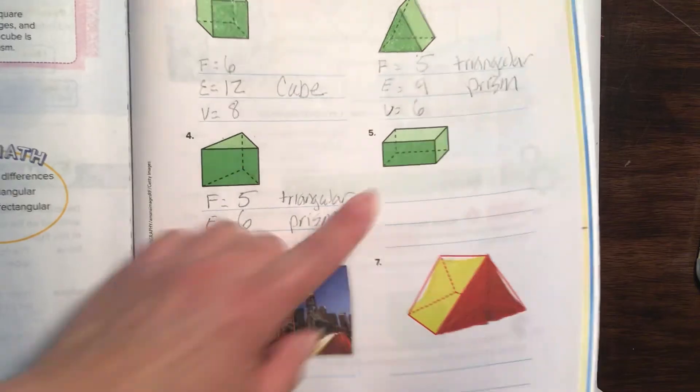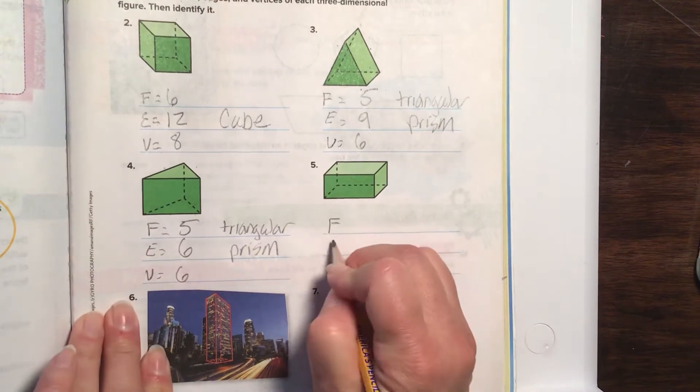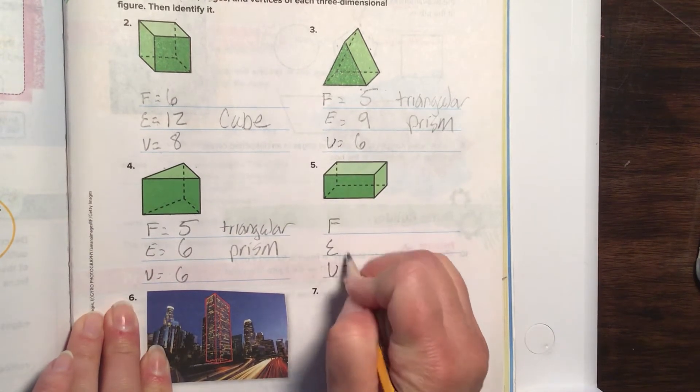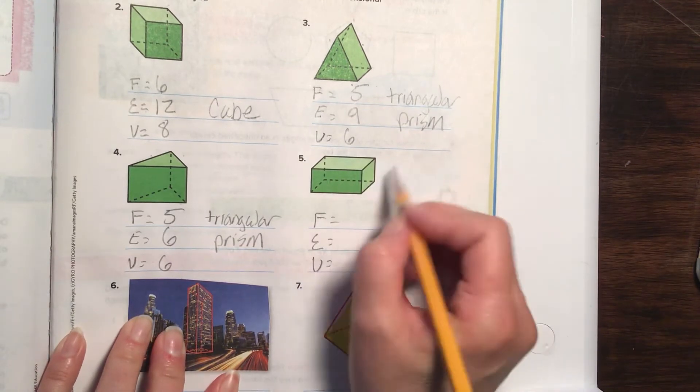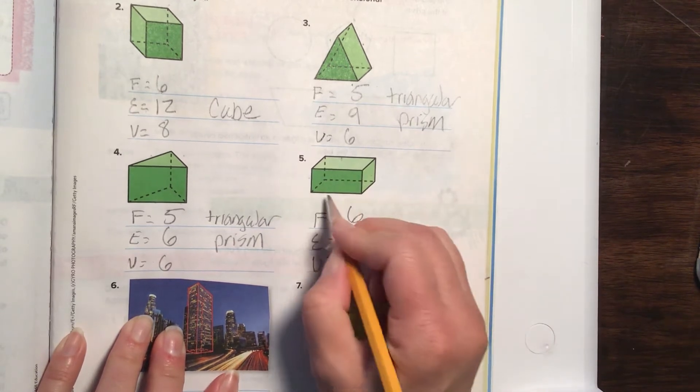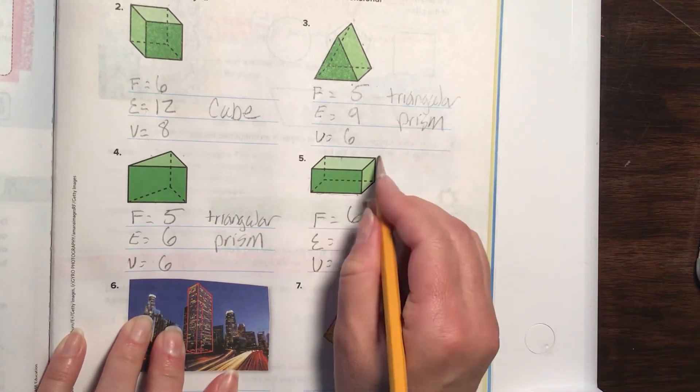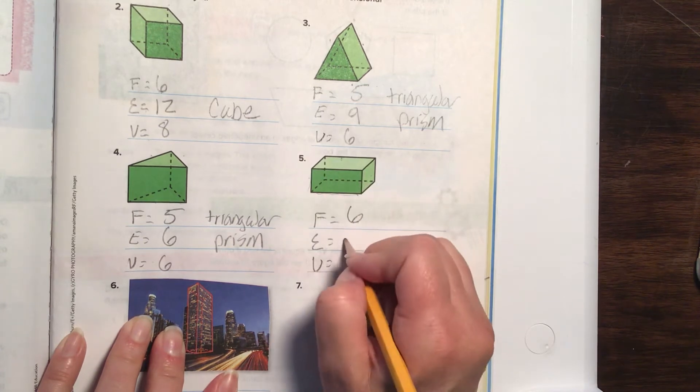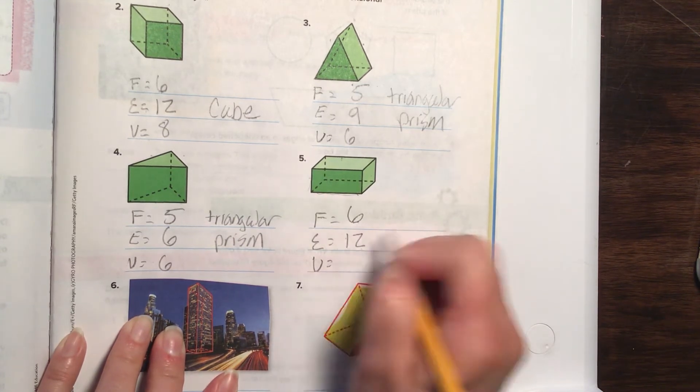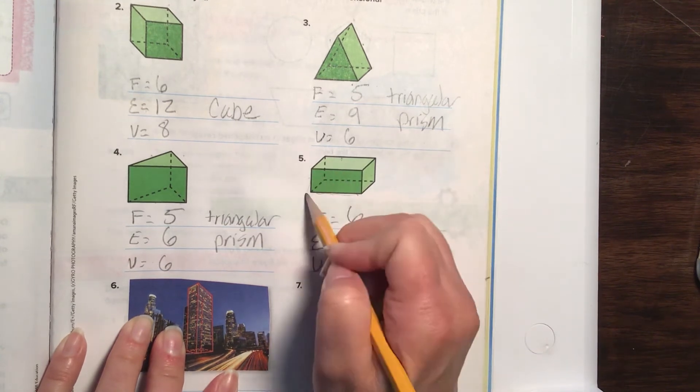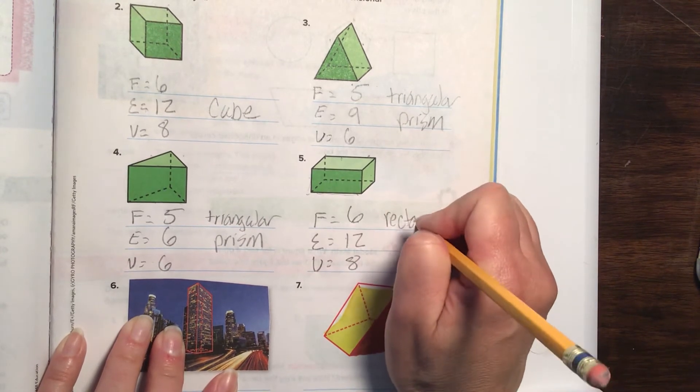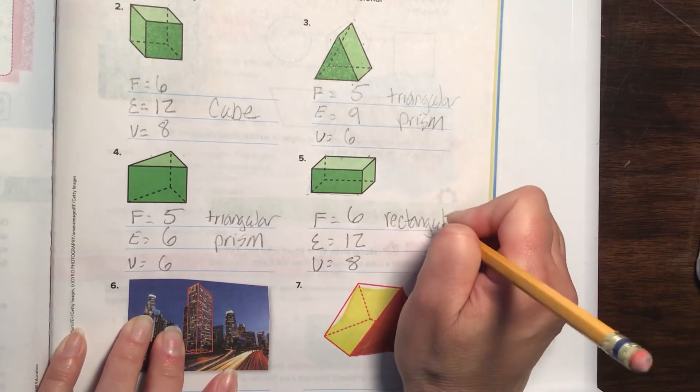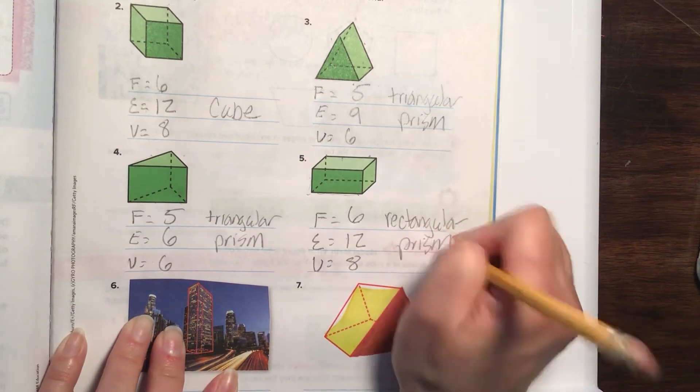Alright. You can probably just look at the picture and decide what that one's going to be, right? But we still need to count the faces, the edges, and the vertices. Faces that we have here: one, and then one on the back—two, three, four, five, six. Okay, edges: one, two, three, four, five, six, seven, eight, nine, ten, eleven, twelve. So that one has a beautiful twelve. And then corners: one, two, three, four, five, six, seven, eight. Triangular or rectangular prism.